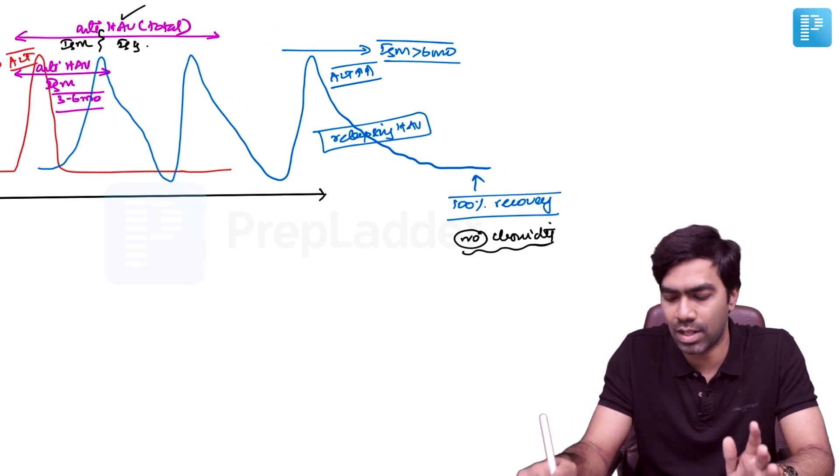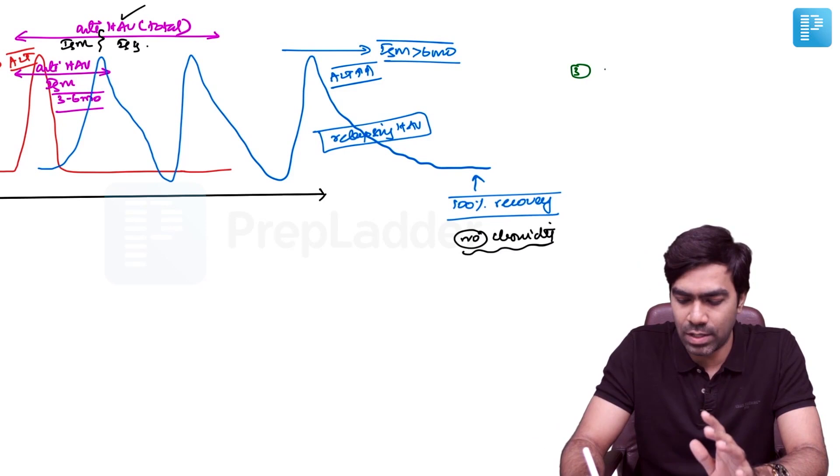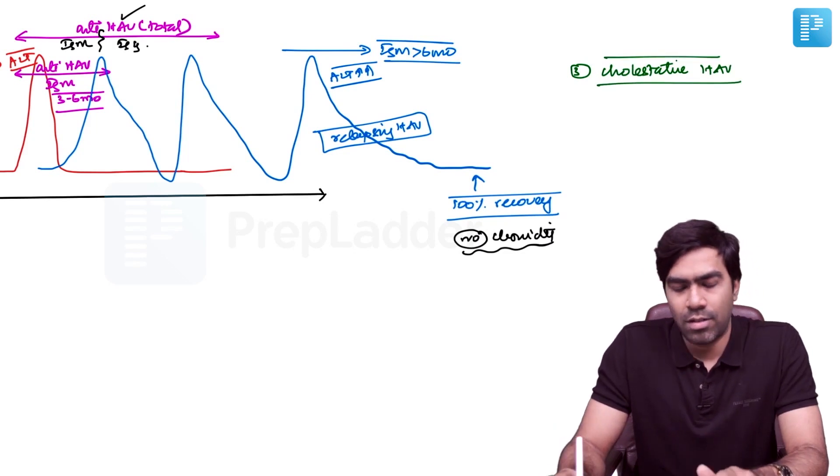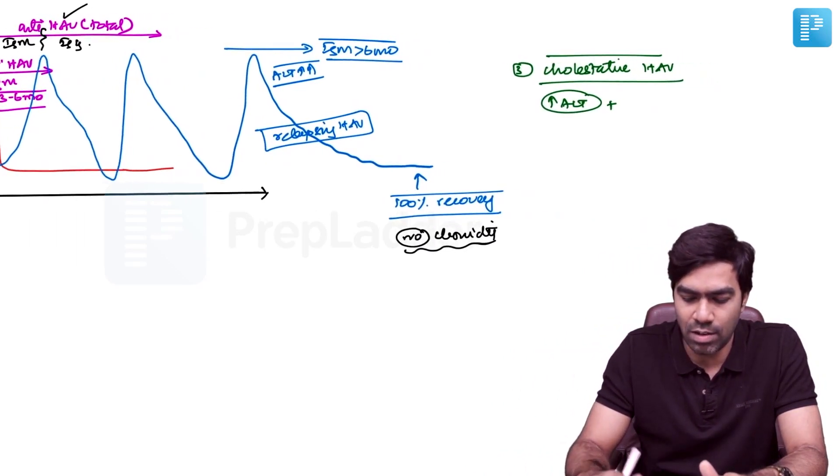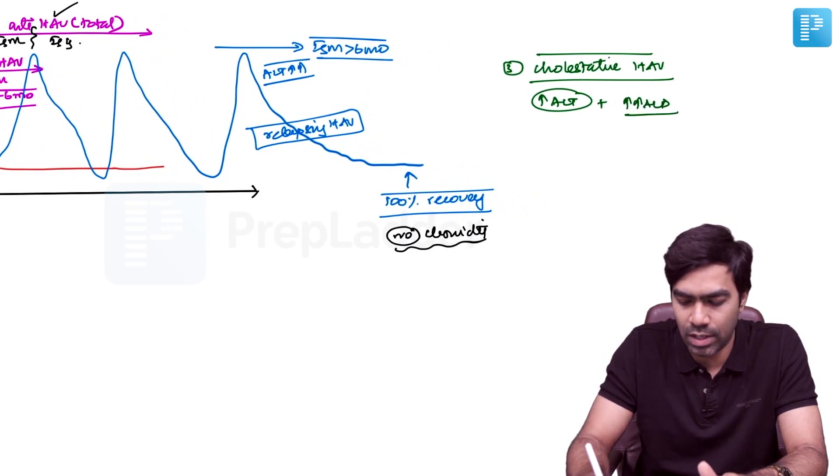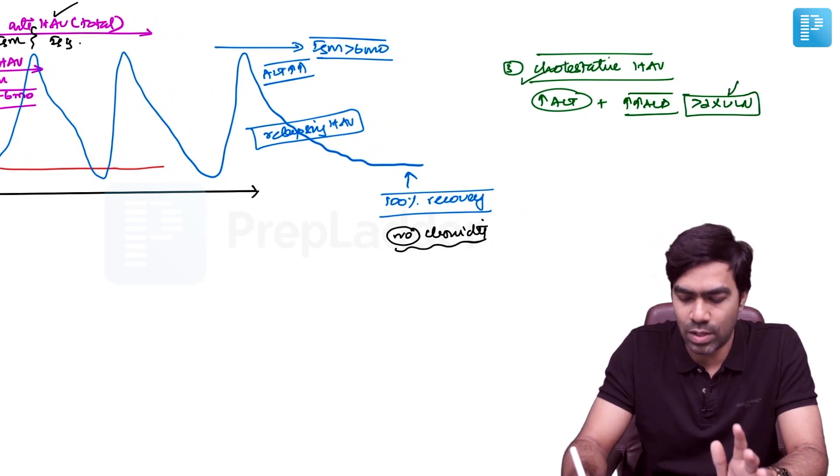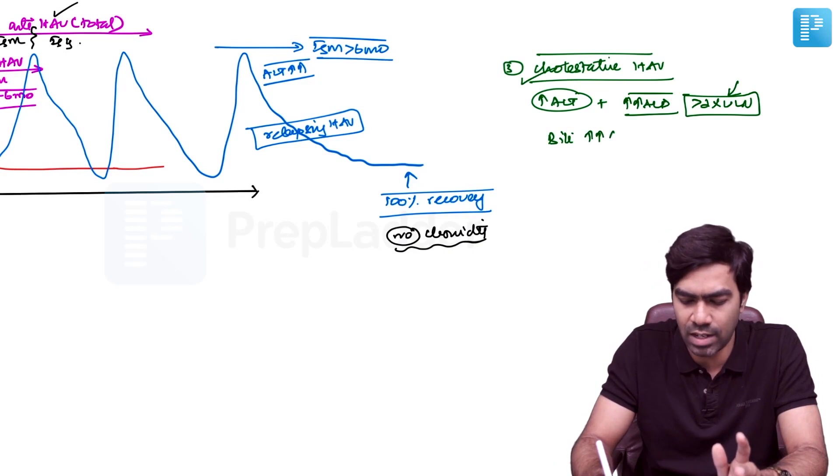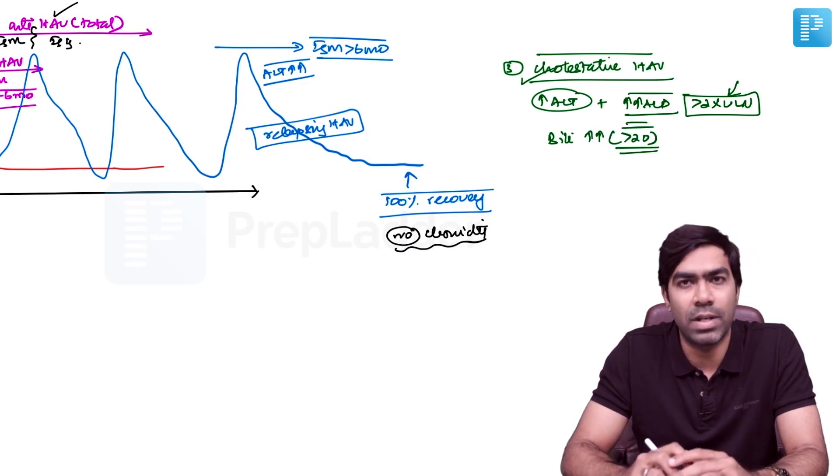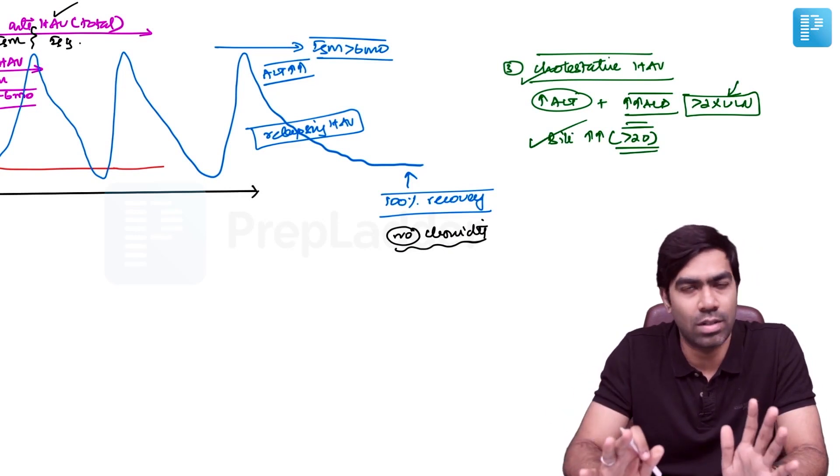The third form is cholestatic HAV infection, where there's a predominantly cholestatic response. These patients will have elevated ALT plus significant ALP elevation, usually more than two times the upper limit of normal. In cholestatic HAV, you see significant increase in ALP, indicating a cholestatic response. The bilirubin levels may be very high, reaching levels more than 20 mg/dL, but this doesn't equate to liver failure unless you have signs of liver failure.